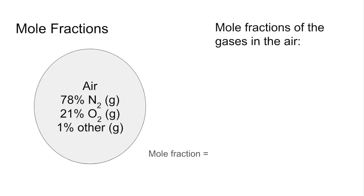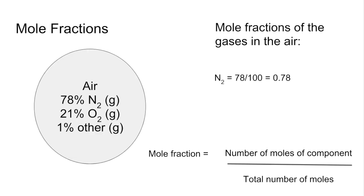So how do you calculate mole fraction? Well, it's the number of moles of that component divided by the total number of moles. So because we're using percentages here, the total number of moles will be 100. So the mole fraction of nitrogen will be 78 over 100, 0.78. Oxygen, 0.21, and other will be 0.01. And a quick check you can always do in your calculations - your mole fractions should always add up to 1.